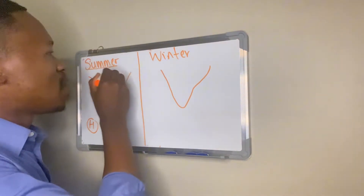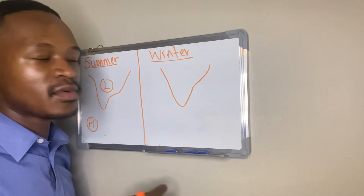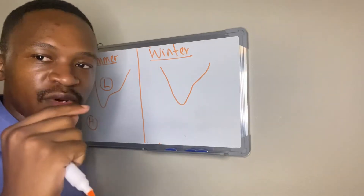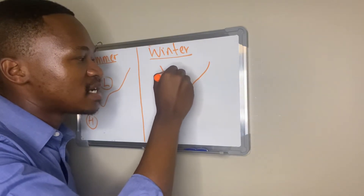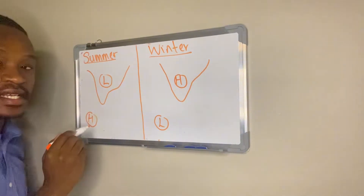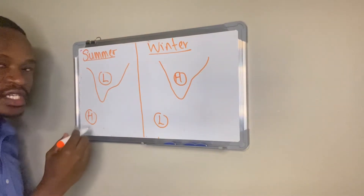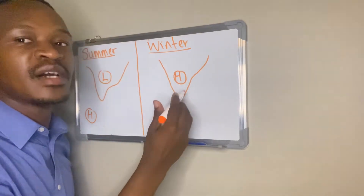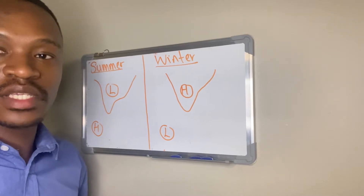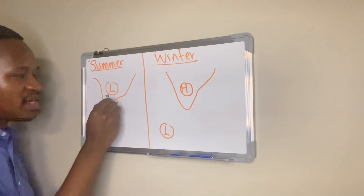In winter, our land heats up and cools faster than the ocean. So in winter, our land will be cold compared to the sea — it cools faster — hence we have more subsiding air on the interior. Air which sinks is associated with high pressure over the interior, and then we have a low pressure developing over the ocean. So in summer: low pressure over the land, high pressure over the ocean. In winter: high pressure over the land, low pressure over the ocean. Winds will always blow from a high pressure to a low pressure.